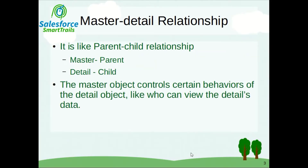What is master detail relationship? It is like a parent-child relationship where master is parent and detail is child. The master object controls certain behaviors of the detail object, like who can see, who can access, certain levels of permissions. Everything will be controlled by the master object.